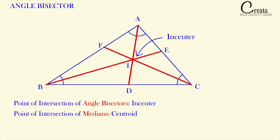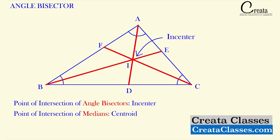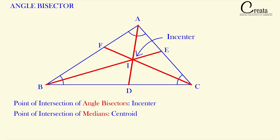I am comparing median with angle bisectors so you can clear your fundamentals. Medians are line segments which meet the midpoint of the opposite side; angle bisectors divide the angle into two equal portions. The point of intersection of medians is called the centroid, denoted by G as G is the center of gravity, and the point of intersection of angle bisectors is the incenter, denoted by I. Why it is called incenter we will see in the course of the lecture.